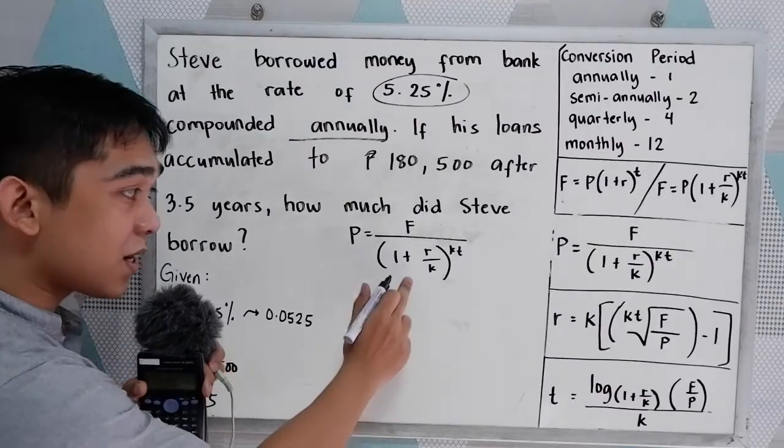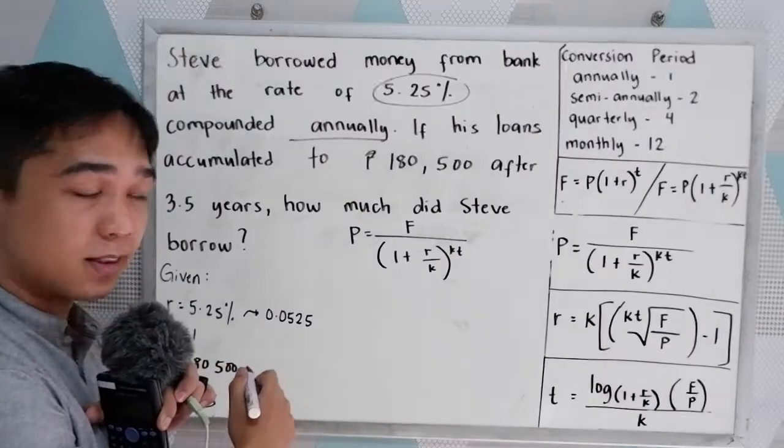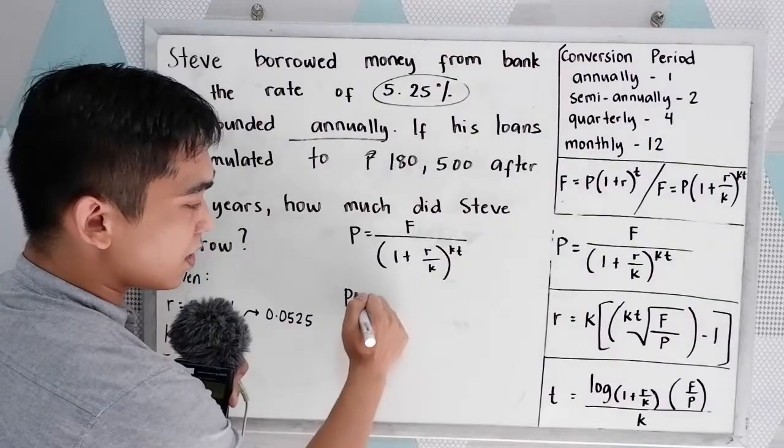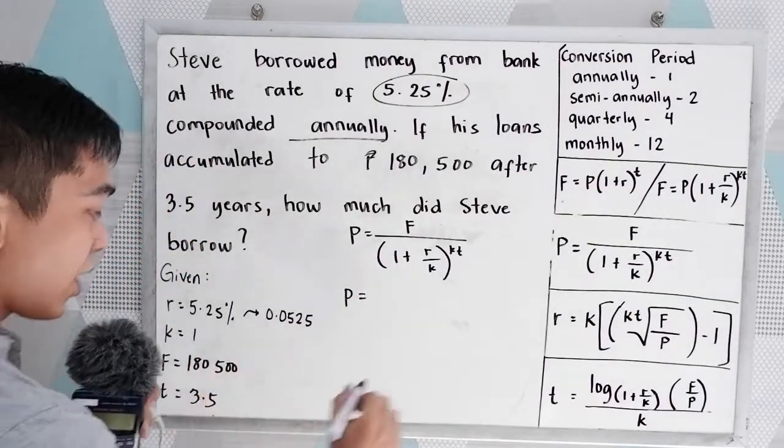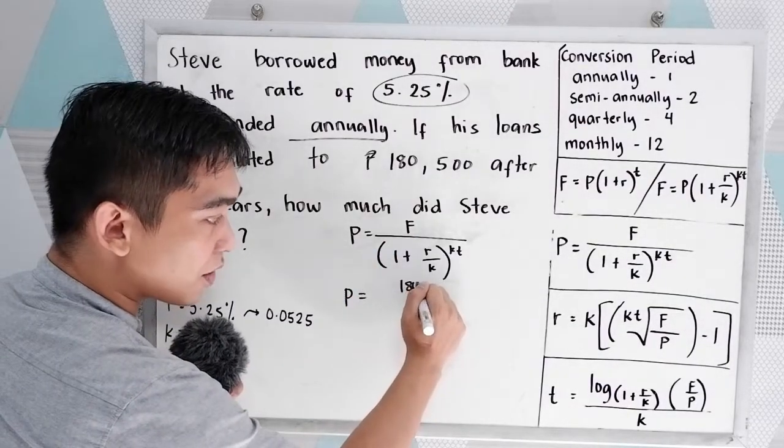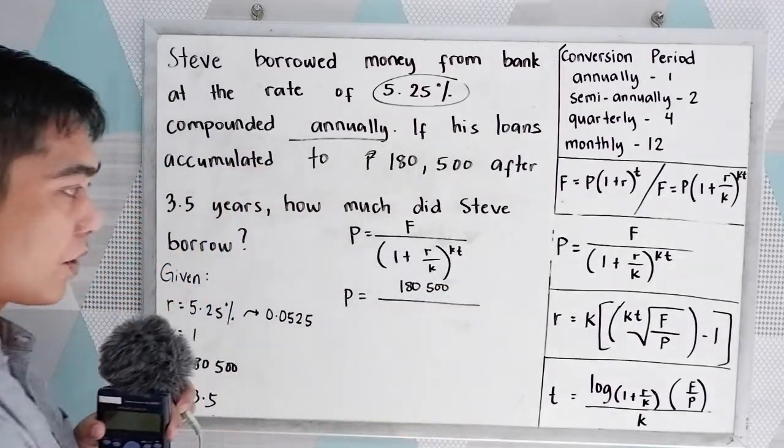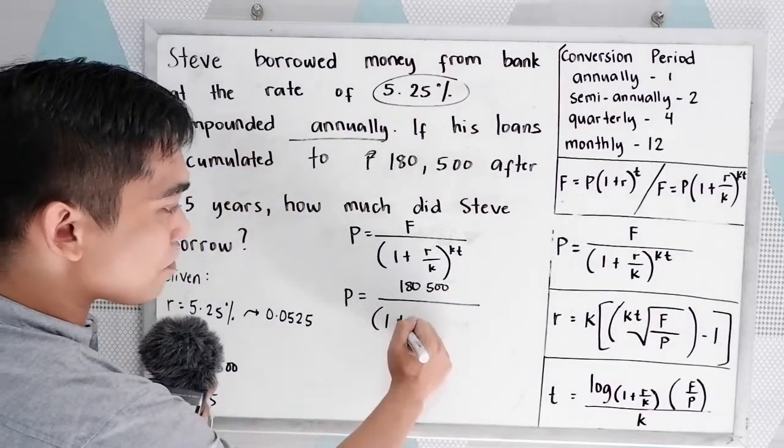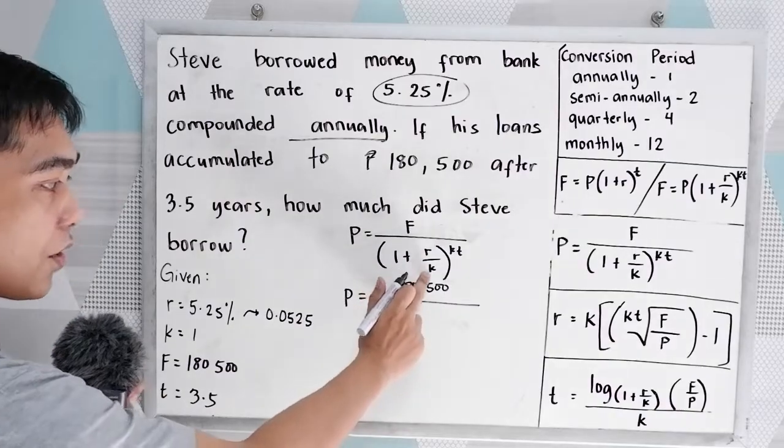Now, since we have the formula, we're going to substitute the given. So F is 180,500. So P is equal to F is 180,500 all over 1 plus R over K.